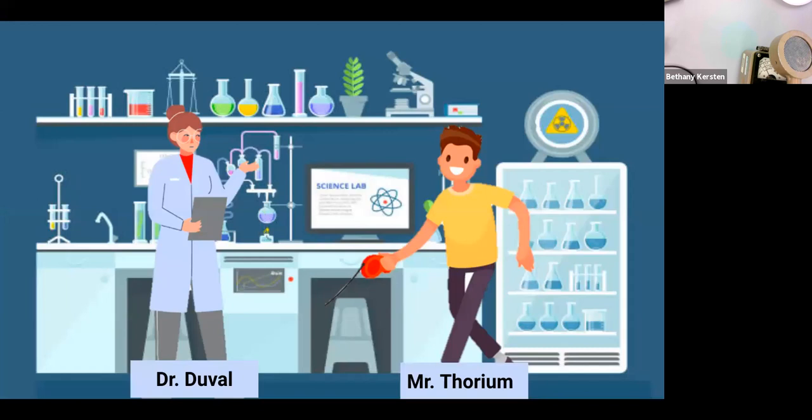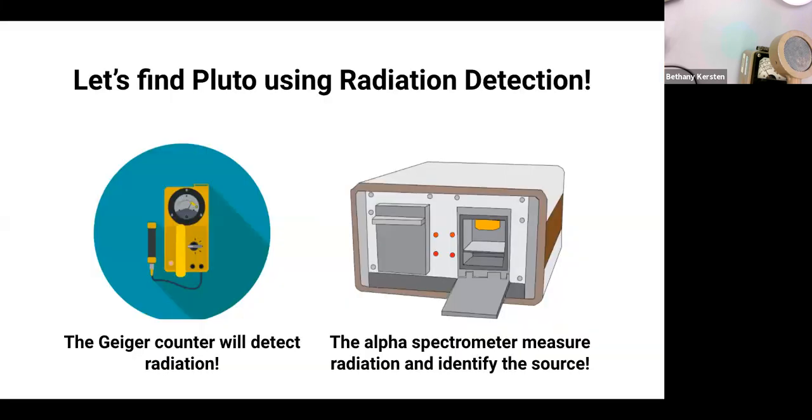Now because Pluto is radioactive, Dr. Duval knows that there's a few different types of ways that we can detect her. We can detect the radiation with a Geiger counter, and if we find an object that has radiation from something that she touched, we can then put that material into our alpha spectrometer to then identify it.